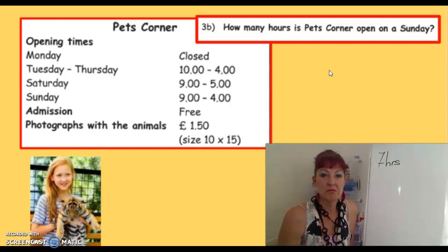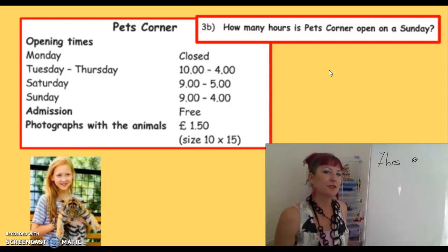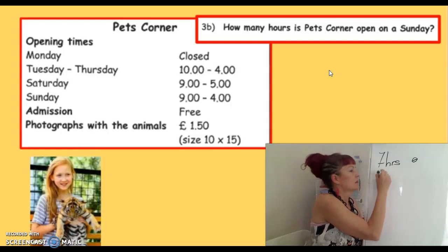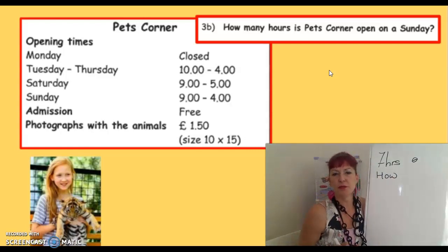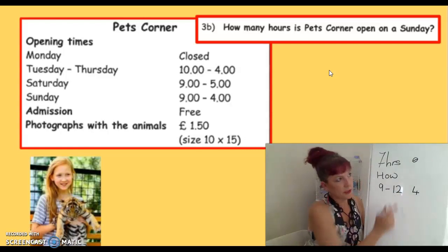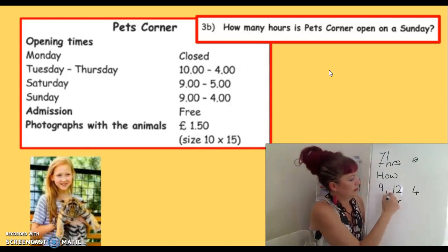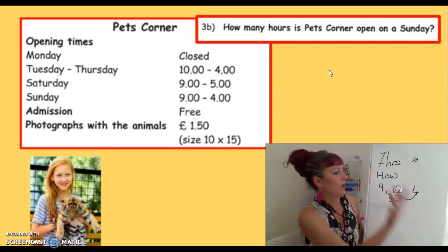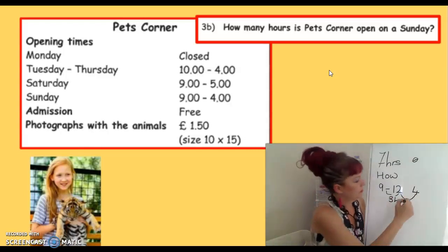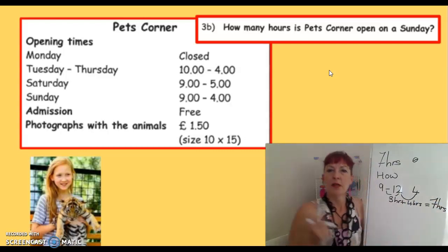How many points will that get me in the exam? Most likely zero, because you haven't shown your method, your workings out. The simplest way is to break the time up. From 9 o'clock to 12 o'clock — that's 3 hours. Then from 12 o'clock to 4 o'clock — 1, 2, 3, 4 hours. Add them together: 7 hours. I've shown my method.